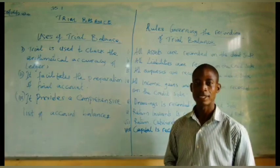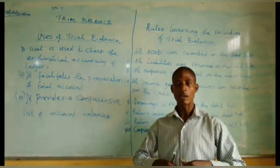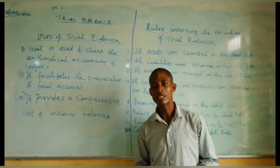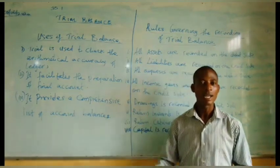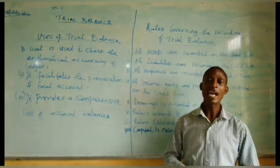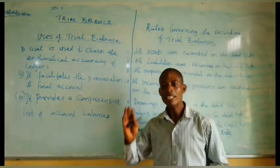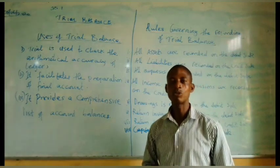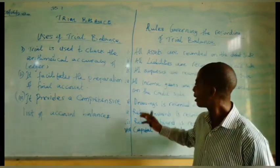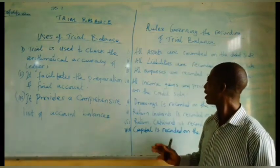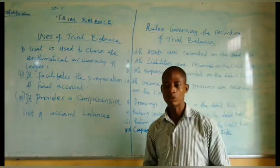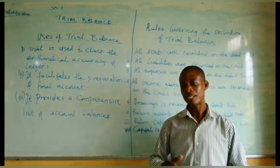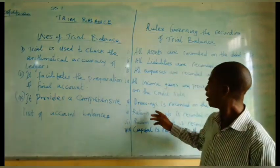Rule three: all expenses accounts — such as salaries and wages accounts, electricity accounts, and other expenses accounts — will be debited to the trial balance, meaning they are recorded on the debit side. Rule four: all income, gains, and provisions will be recorded on the credit side of the trial balance.